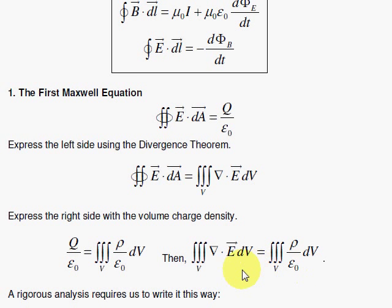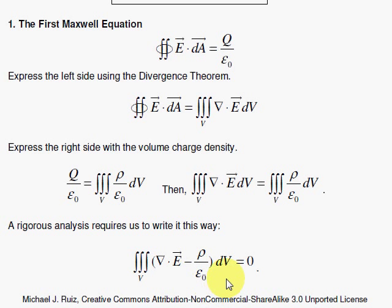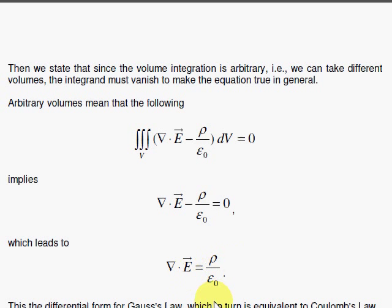We get this equation with two volume integrals, and we subtract the right from both sides to get it into a form where, since the volume can be chosen arbitrarily to get this to be zero all the time, the integrand must be zero. This has to be zero all the time, with dv being anything we want. So that means del·E equals rho over epsilon sub nought — our first Maxwell equation in differential form.